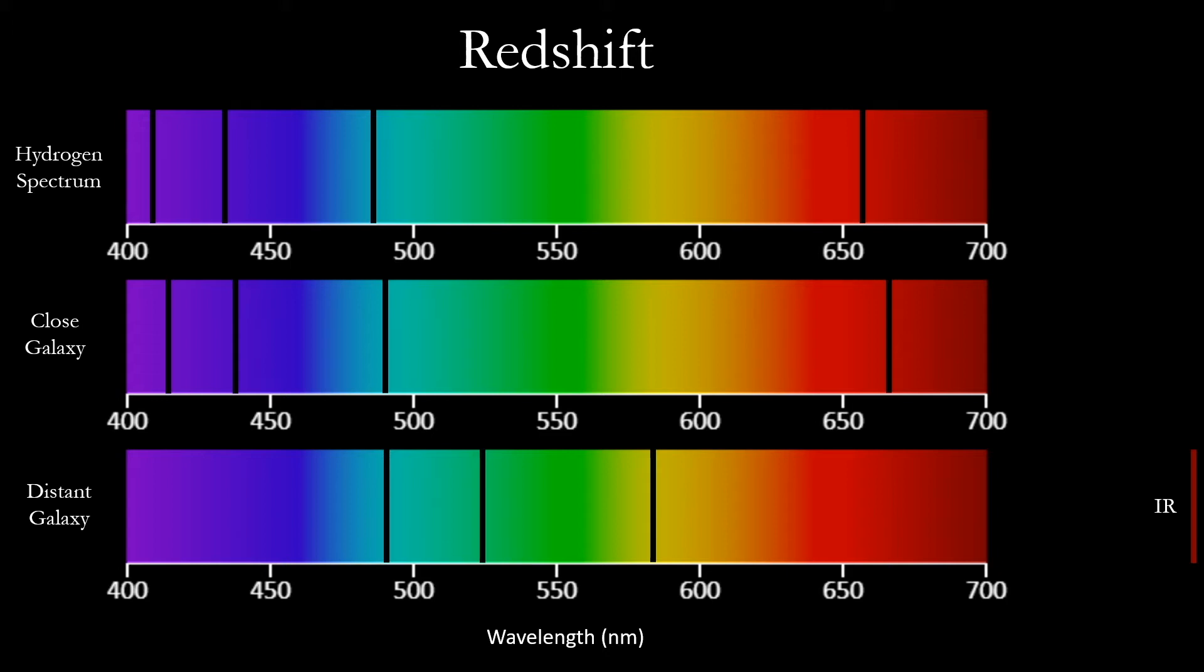Infrared light shifted from shorter wavelengths in this way is one of the things the James Webb Space Telescope is searching for.